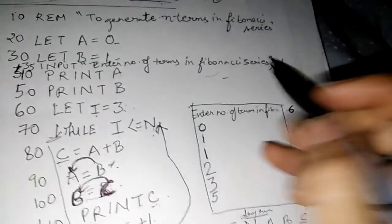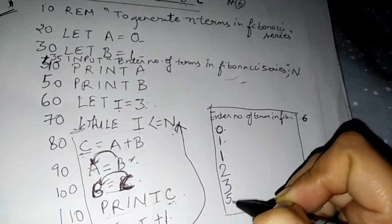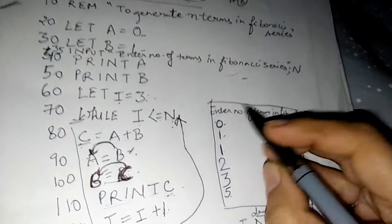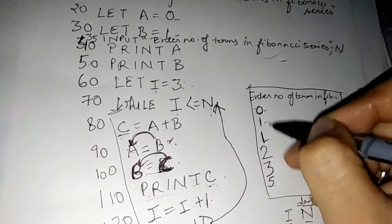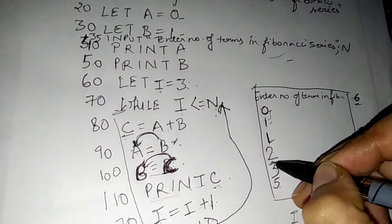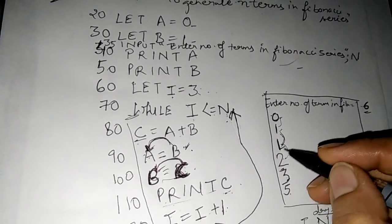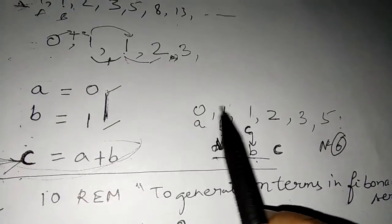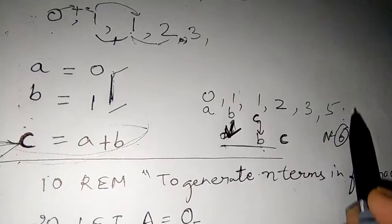Now let us see how many terms of Fibonacci series are printed: 1, 2, 3, 4, 5, 6. We needed 6 terms and these 6 terms are printed. You can easily see that each term is the sum of the previous two — this is the sum of these two, and this is the sum of these two, and so on. The output is: 0, 1, 1, 2, 3, 5. This is the required output.